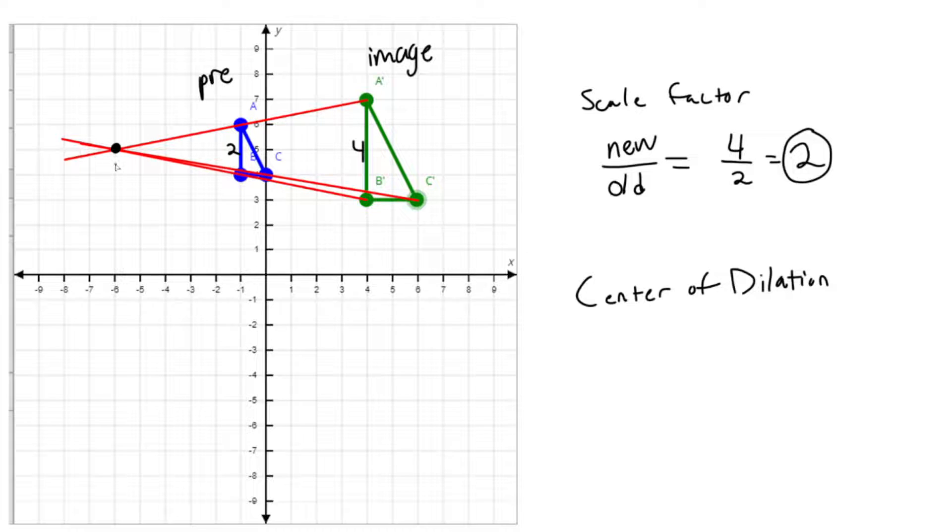I'm going to call that O. That's going to be my center of dilation. And to figure out the coordinates of my center of dilation, I'm going to put O, the letter that represents it, and go ahead and put coordinates for it. So to find that out, we just have to find the coordinates.